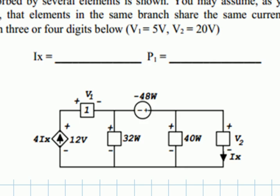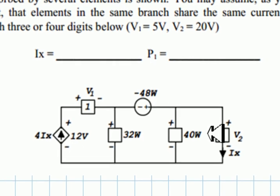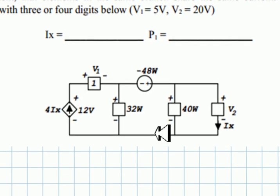We know from Tellegen's theorem that the sum of all powers in this circuit is going to be zero. So if we write that expression, we'll have an equation with one unknown only, IX. Let's write that equation. We begin with the power in this source. It's delivered power, negative. The voltage is 12 times 4IX. That is 48IX. That is the power in this source.